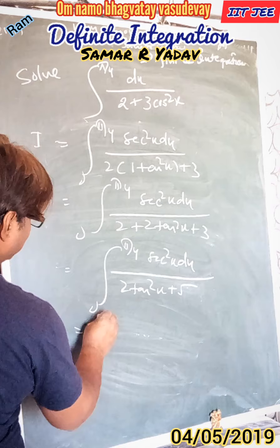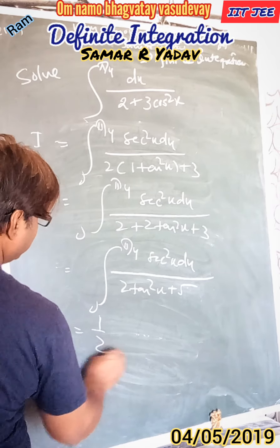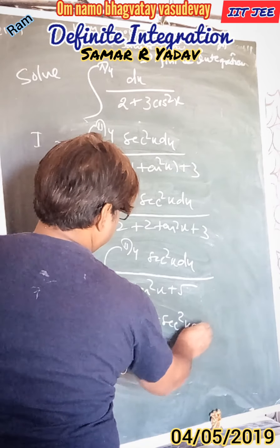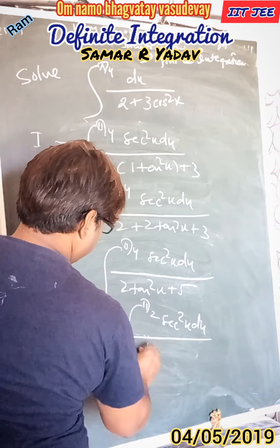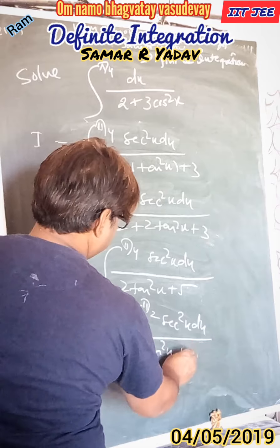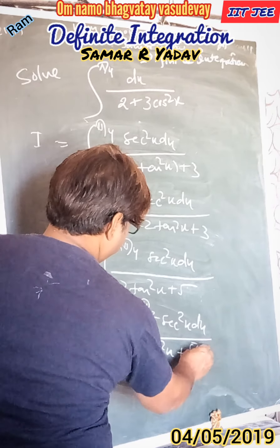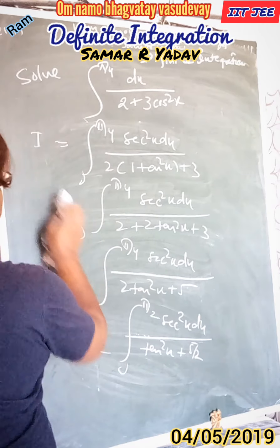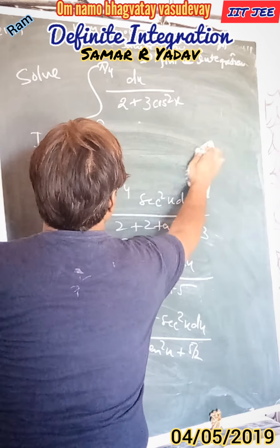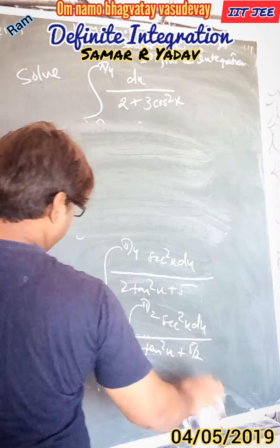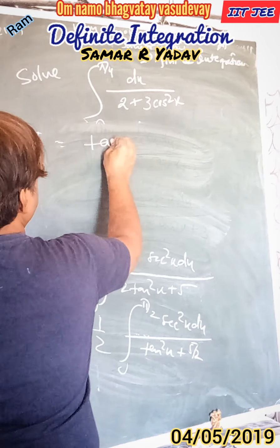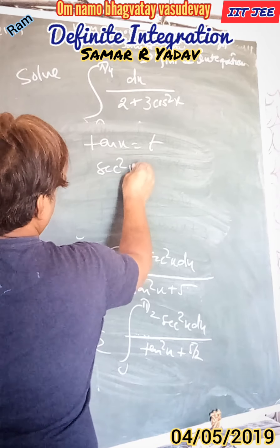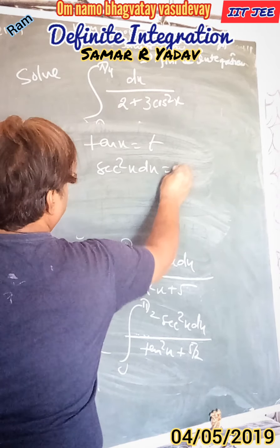We rewrite: I is equal to integration from 0 to π/4 of sec squared x dx upon 2 into (1 plus tan squared x) plus 3. Now taking 1 by 2 as common, we get 1 by 2 times integration from 0 to π/4 of sec squared x dx upon tan squared x plus 5 by 2. Now we take the substitution: let tan x equal to t, so sec squared x dx equals dt.